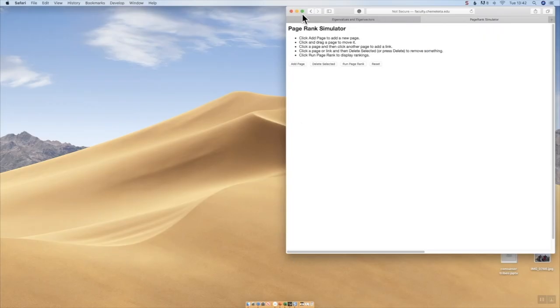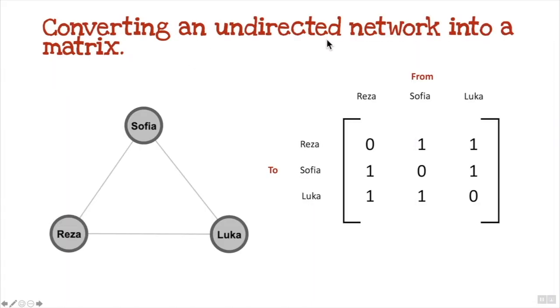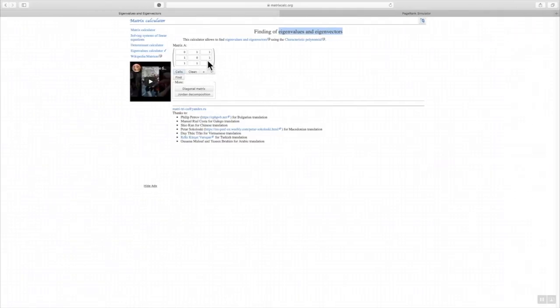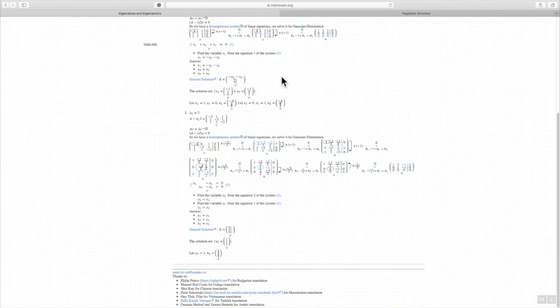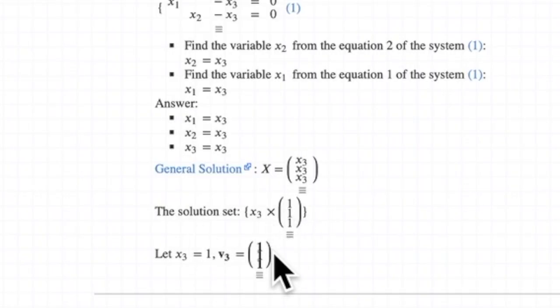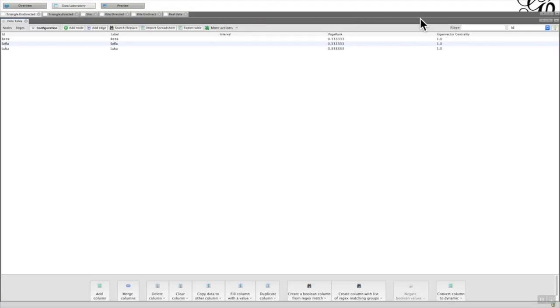We've got here the matrix calculator. As we saw in the example, this is quite a difficult thing if you're not used to it, working out the matrix. But once you've got that, you can add it to your matrix calculator here. I've got the values - Reza, Sofia, Luka - placed in here, and then all I have to do is click on find and it gives me my values, which in this case is going to be one, one, one. If I go back to Gephi and remind us of the output, the eigenvectors are one, one, one.